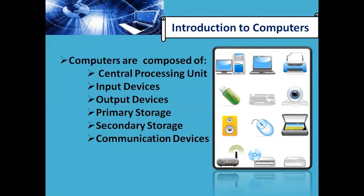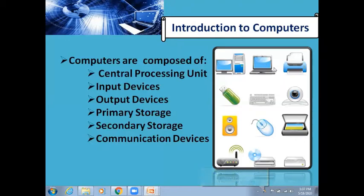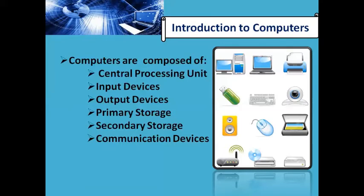The CPU is used to control all activities inside the computer system — it takes input, processes it, and converts it into output. Input devices include keyboard and mouse: the mouse is a pointing device, and the keyboard is a text data-entering device. Output devices include the monitor and printer: the monitor is a soft copy output device and the printer is a hard copy output device. Primary storage devices include RAM and ROM.